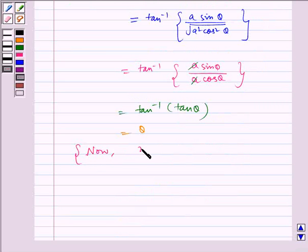Now, x is equal to a sine theta. Therefore, x by a is equal to sine theta, which implies theta is equal to sine inverse x by a.